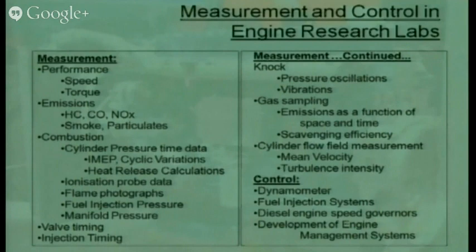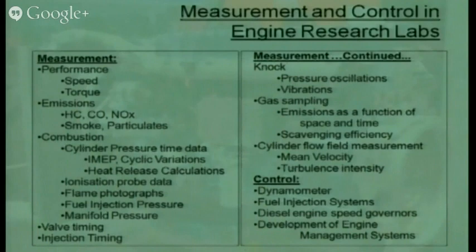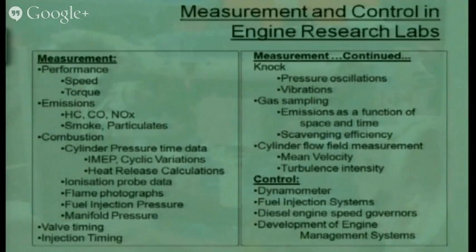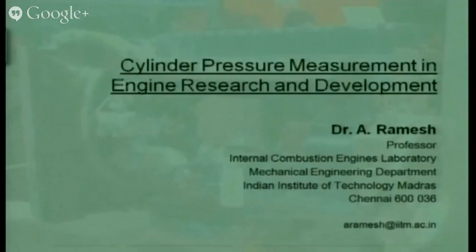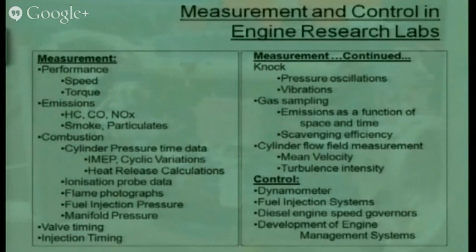We may also want to measure simultaneously valve timing, injection timing, and other parameters like temperatures. From cylinder pressure we also estimate knock (NOC), which can be detected through high-frequency pressure oscillations or vibrations on the cylinder itself. We may also do sampling of gases from within the cylinder to look at emissions as a function of space and time, and even look at scavenging efficiency in two-stroke engines. For flow field measurements inside the cylinder, we look at mean velocity and turbulence intensity.